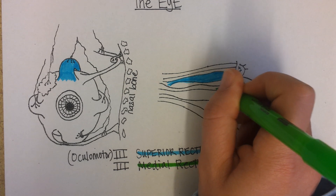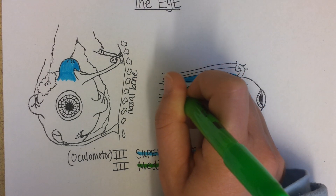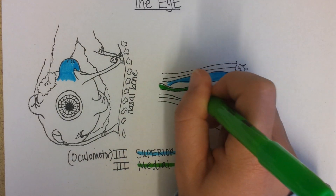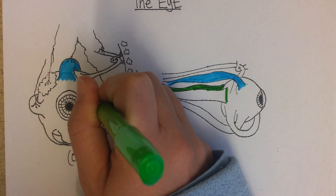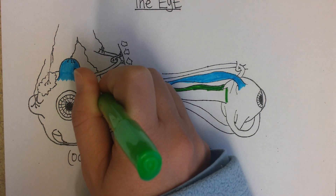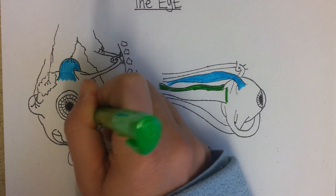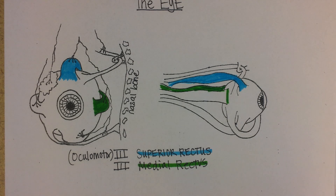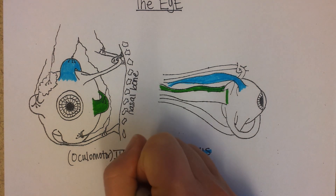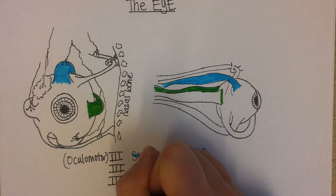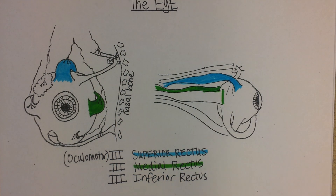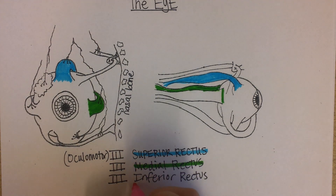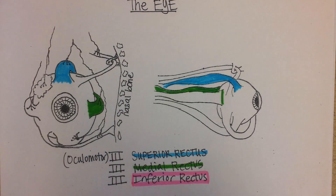The medial rectus, since this is the right eye, would be hidden right here. Then the inferior rectus is also controlled by the oculomotor cranial nerve. You can hear in its name what it's doing — it's going to turn the eye down when it contracts.